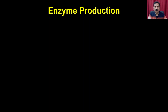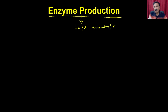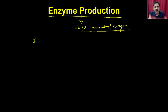Enzyme production, as the name suggests, is where you are actually going to prepare a large amount of enzyme. There are two approaches one can use. The first approach is that one can purify the enzyme from rich sources.